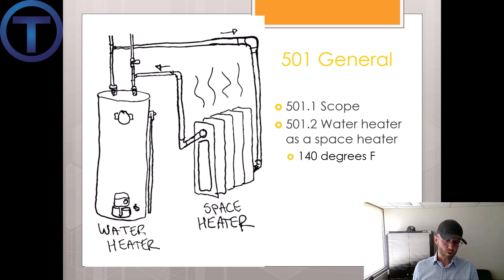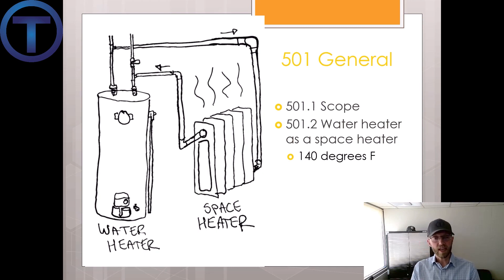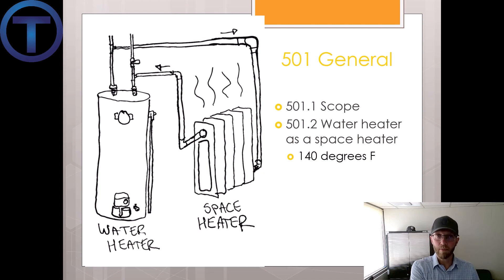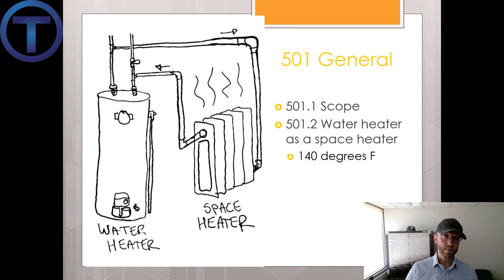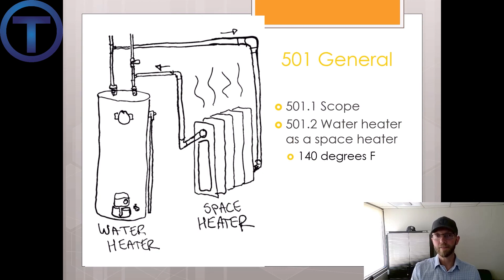Section 501.2 covers water heaters used as a space heater. You can see from this illustration a tank-type water heater and an ancient radiant heater. The principle is that we use the water heater to heat the space, but if we do that it will probably need to run at a higher temperature than what would be safe at our faucets. Already 120 degrees can scald, but higher temperatures cause scalding very quickly. This code section says that if we are heating space, we must limit the potable water side to 140 degrees — even if it takes 150, 160, or more to adequately heat the space. That means we may turn up the water heater but then temper it down at the faucets so we don't get burned.